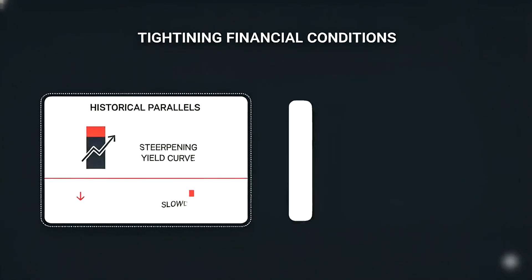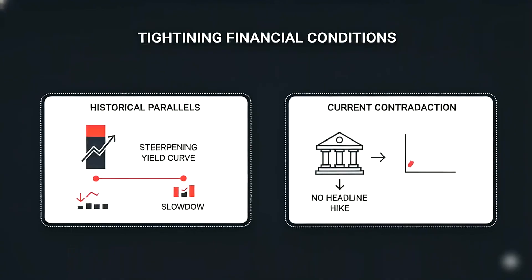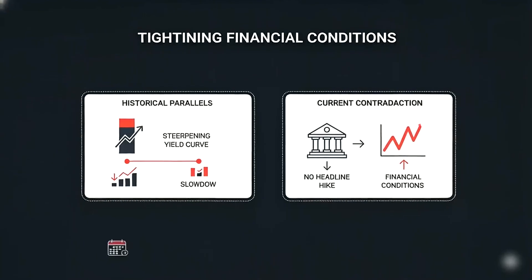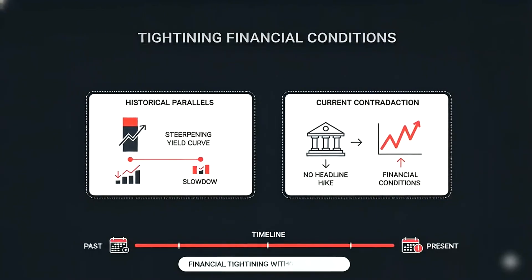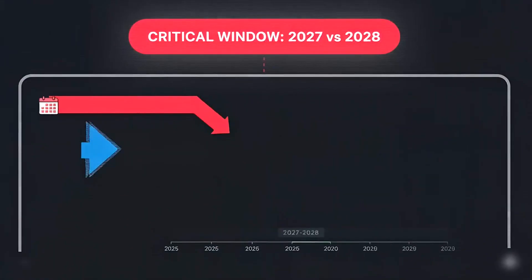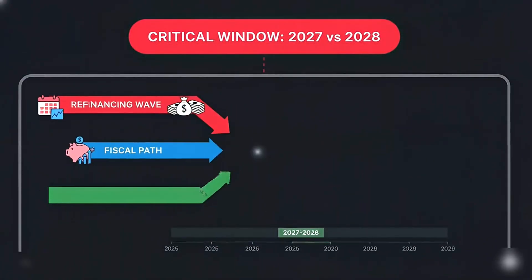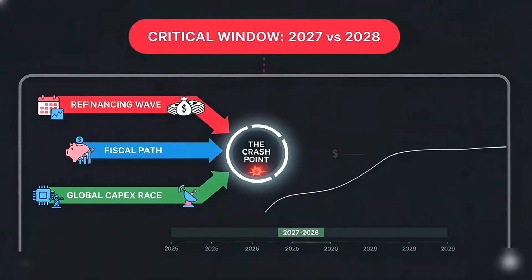It tightens financial conditions without a headline hike. Historical parallels link steepening curves to slowdowns. Coming up: the countdown that decides 2027 versus 2028.